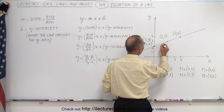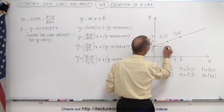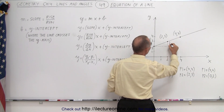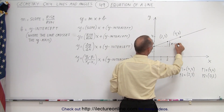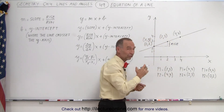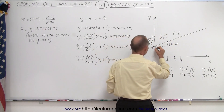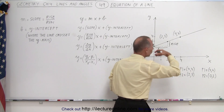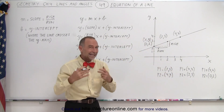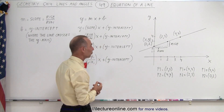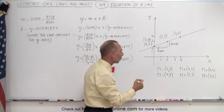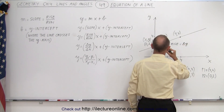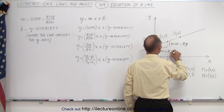For example, when you go from one point to another, the run is the distance in the x direction and the rise is the distance in the y direction. The rise is how far you go up in the y direction to get to the next point, and the run is how far you move in the x direction. By definition, the rise is the change in the y direction and the run is the change in the x direction.